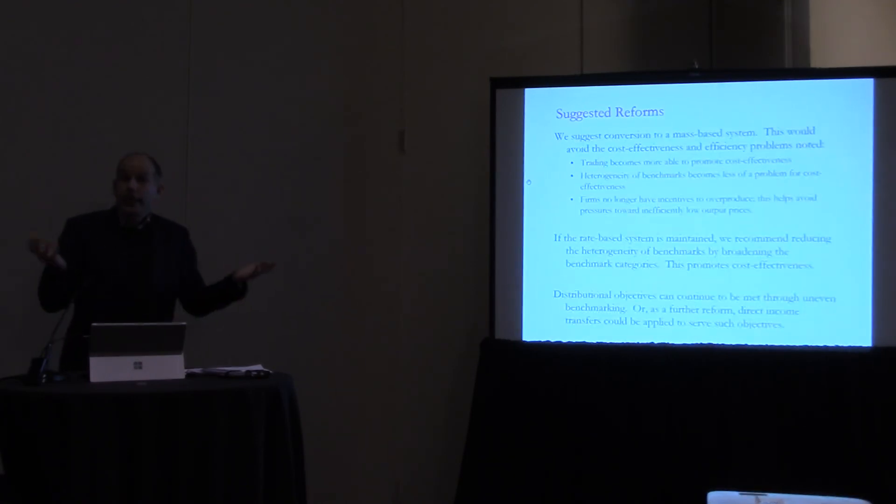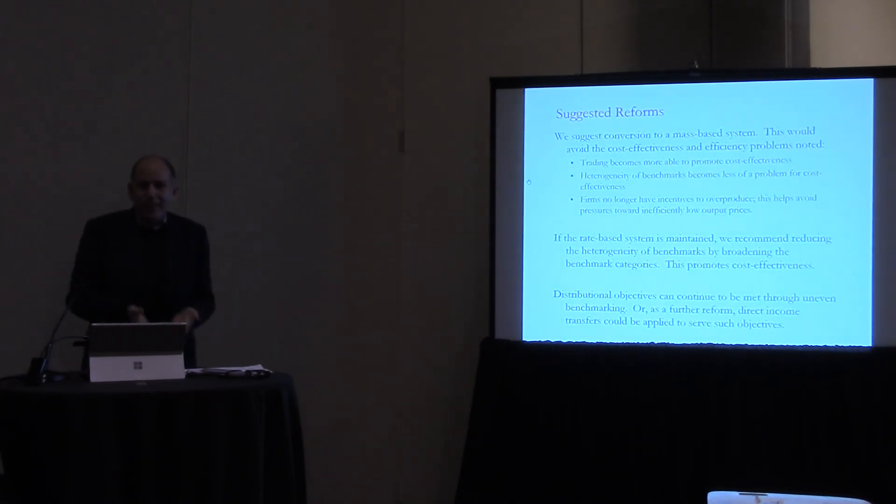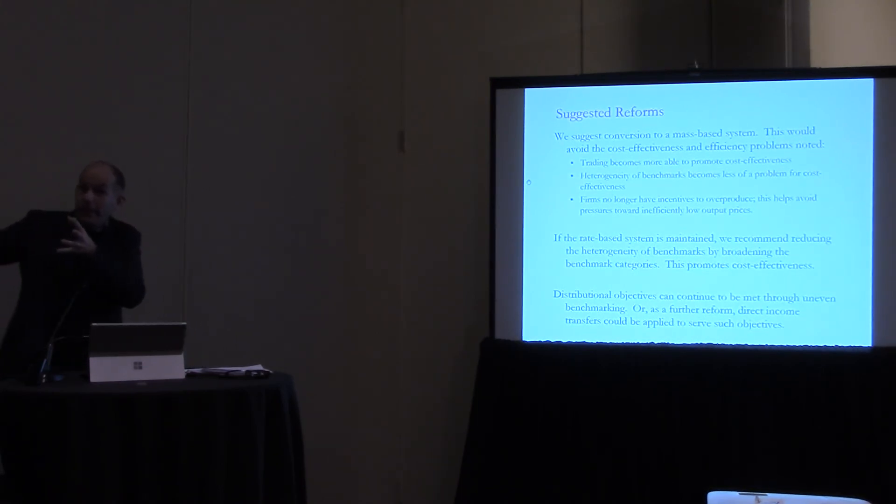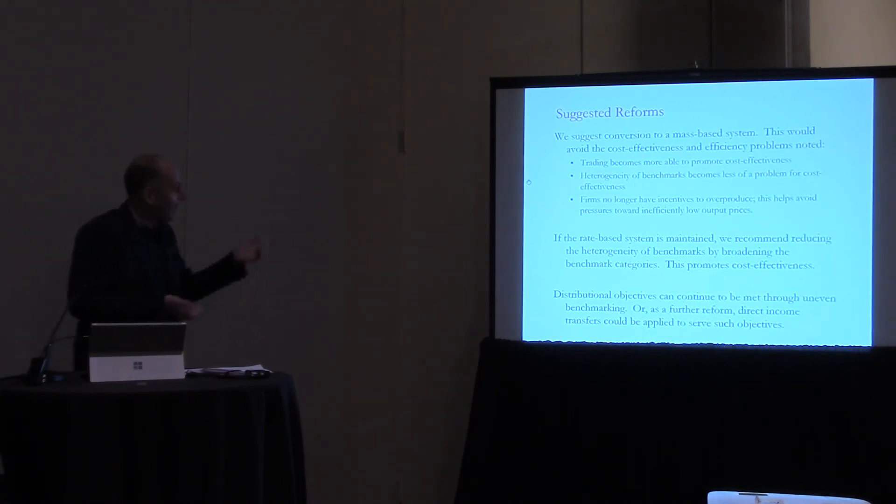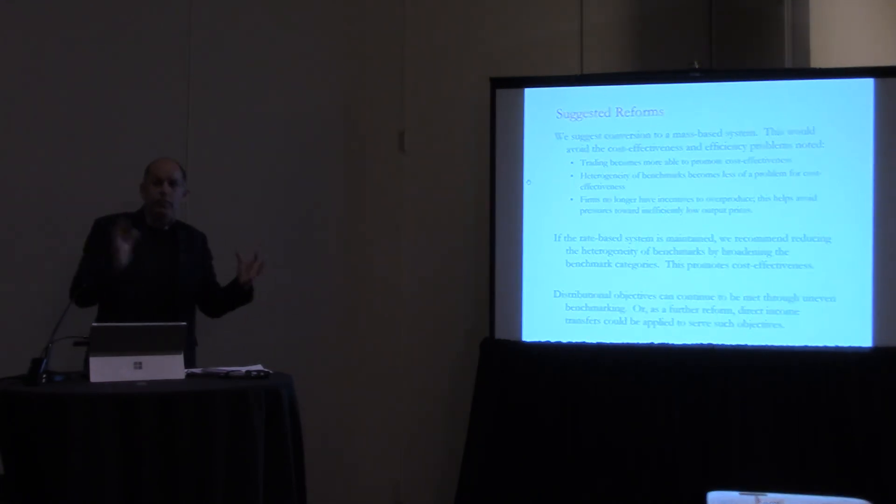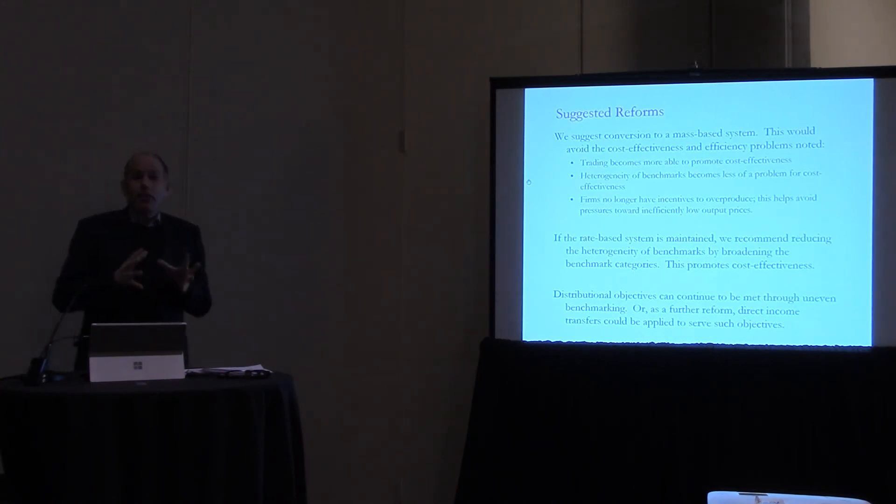If the rate-based system is maintained, which I think is what's going to happen, I don't see this changing in the next year or two, even though I was very excited to see that maybe in the longer run there might be a wait after the initial phase to switch to a mass-based system in 2025, I think was the number I saw on the slide. So if the rate-based system is maintained, I think trying to exert pressure to reduce the heterogeneity of these benchmarks as much as possible would be in the interest of the overall system design here. So there's till March that gives two months for our Chinese colleagues to influence the process here. Trying to reduce the heterogeneity here is important. It's important to keep in mind that distributional objectives can be met through uneven benchmarking. You could do direct income transfers to address these issues relatively easily.